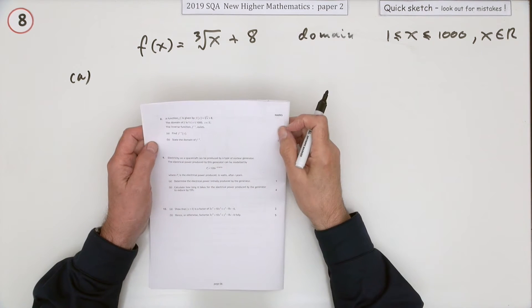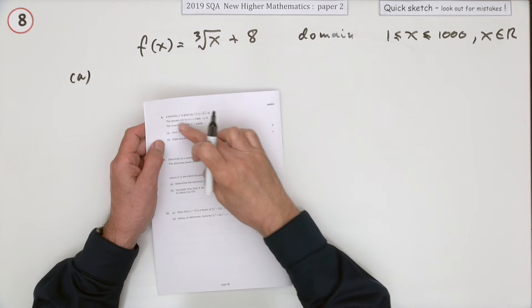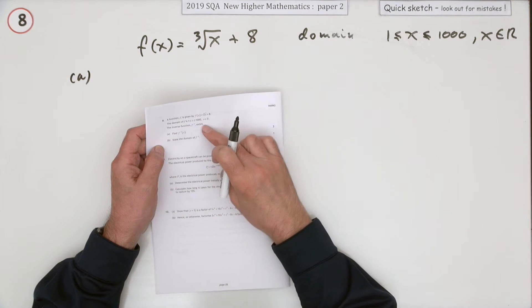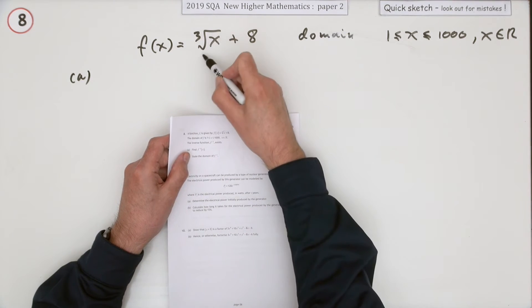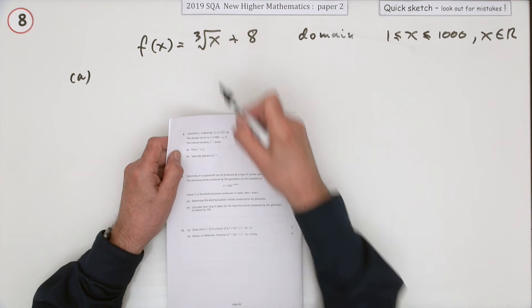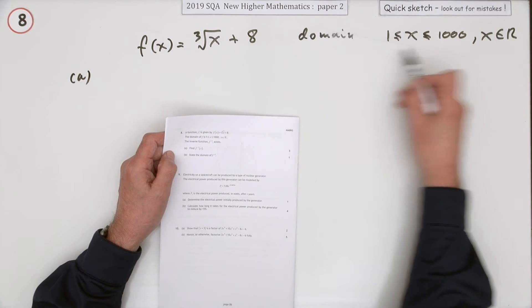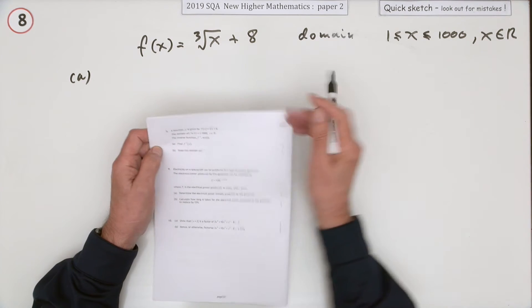Question 8 from the 2019 Higher Maths Paper 2. Functions again, it wants the inverse of a function. You spot that straight away - it says the inverse function exists, and it should do because with a cube root there's only one value for each value of x. This one rises smoothly in this domain, it gives a domain all the real numbers from 1 to 1000.